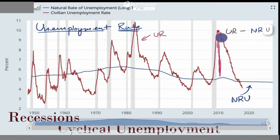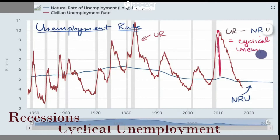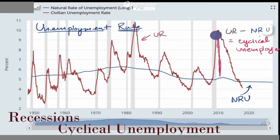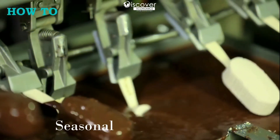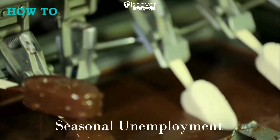Cyclical unemployment happens when we subtract the unemployment rate from the natural rate of unemployment. It occurs when the country is in recession, because aggregate demand in the country is low. Because aggregate demand is low, factories and companies are going to produce less, which is why they may downsize by firing people, causing unemployment.